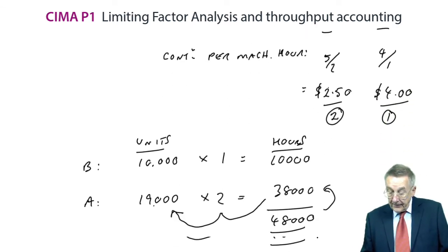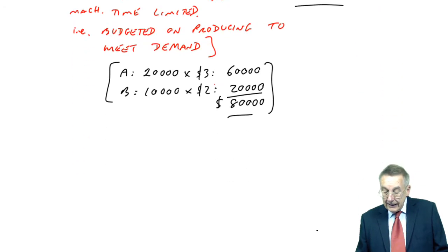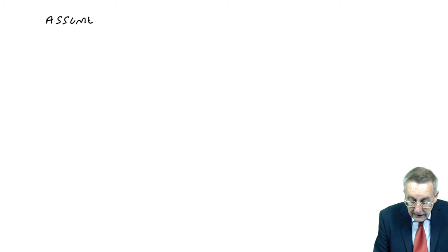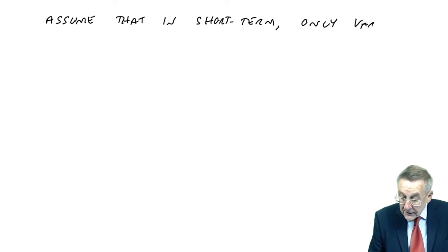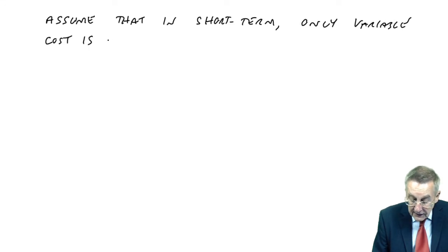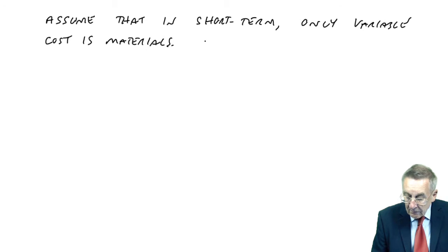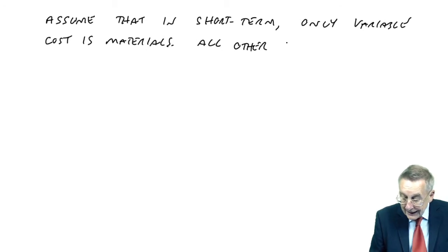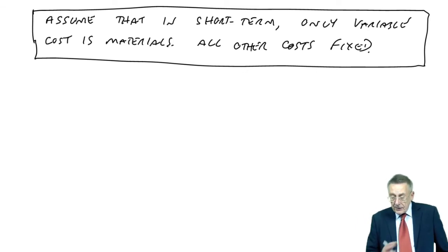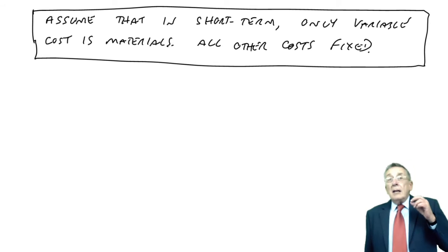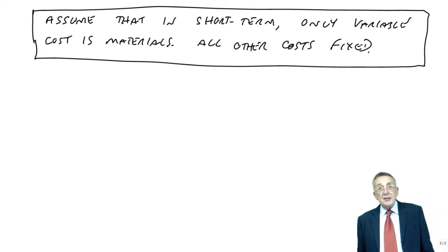And that is the one big assumption that throughput accounting makes. With throughput accounting, we assume that in the short term, the only variable cost is materials. All other costs are fixed. That's the big assumption we make in throughput accounting, which I think is more realistic for most businesses.